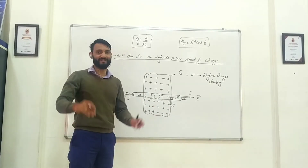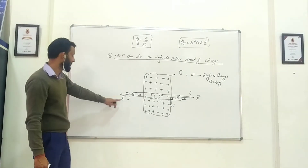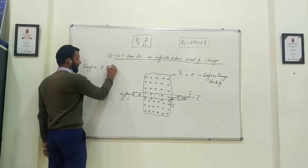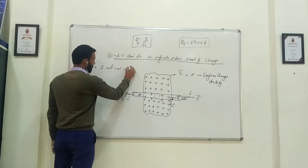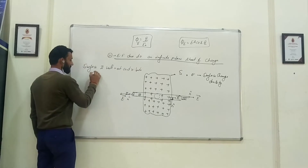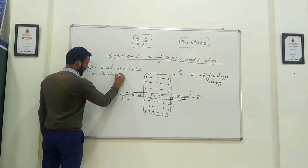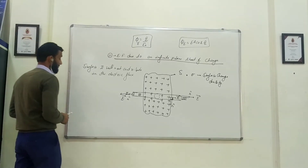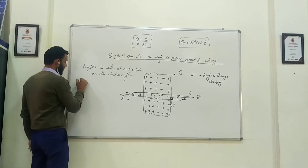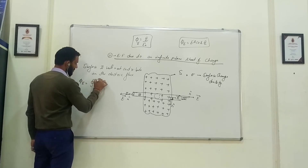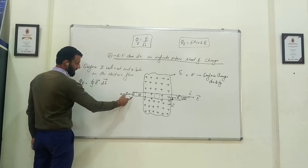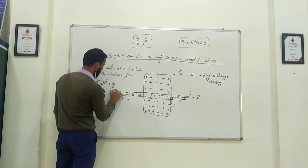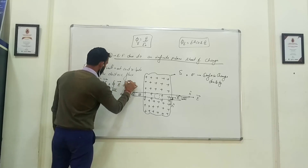So the curved surface will not contribute to the electric flux, because the angle between the electric field and the area vector is 90 degrees. Therefore only surface one and surface three are going to contribute. The total electric flux is the surface integral of E dot dS over the first surface plus the surface integral of E dot dS over the third surface. The electric field and area vectors are in the same direction for both these surfaces.